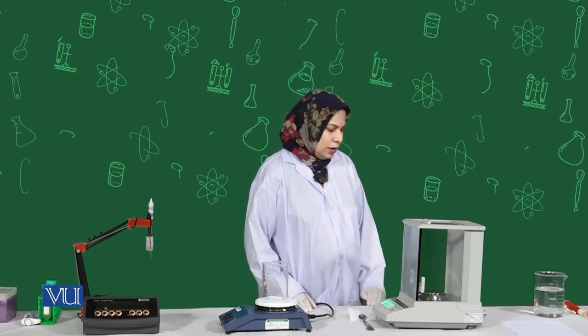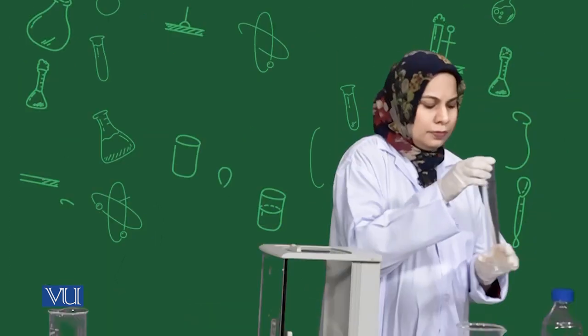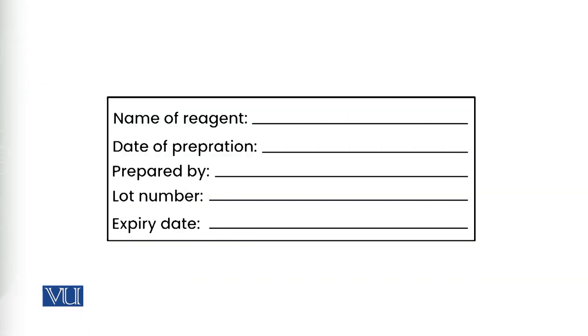For example, while measuring liquid reagents, we should use narrow neck apparatus like measuring cylinders. They should be properly labeled with a tag mentioning the name of the reagent, date of preparation, the initials of the person who prepared the solution, lot number, and expiry number.